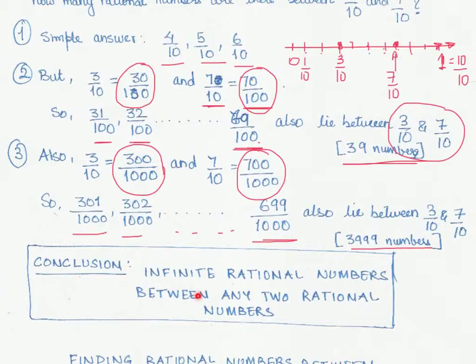And in the next couple of videos we will look at how do we find these additional rational numbers between any two given rational numbers.